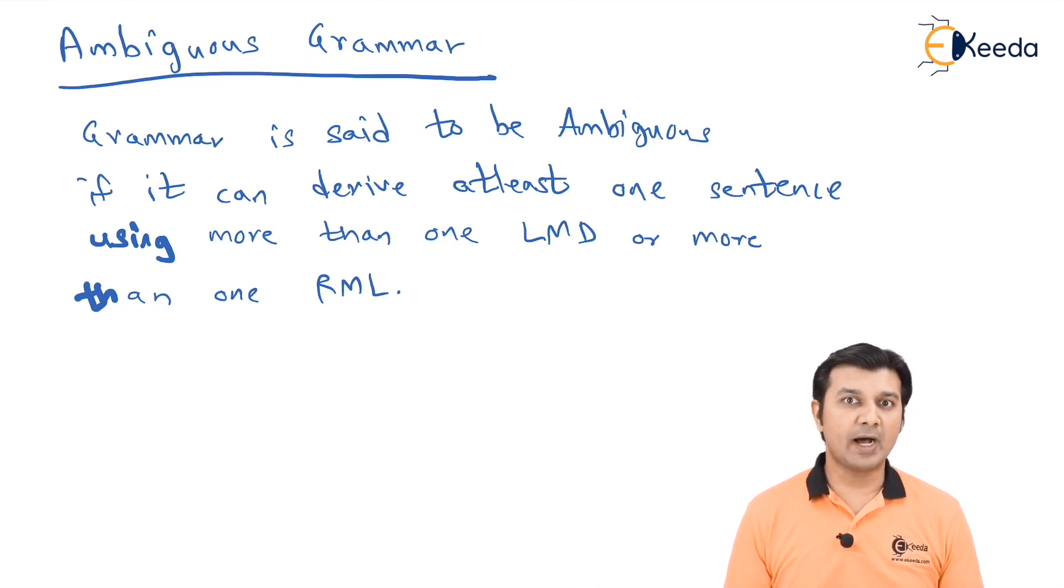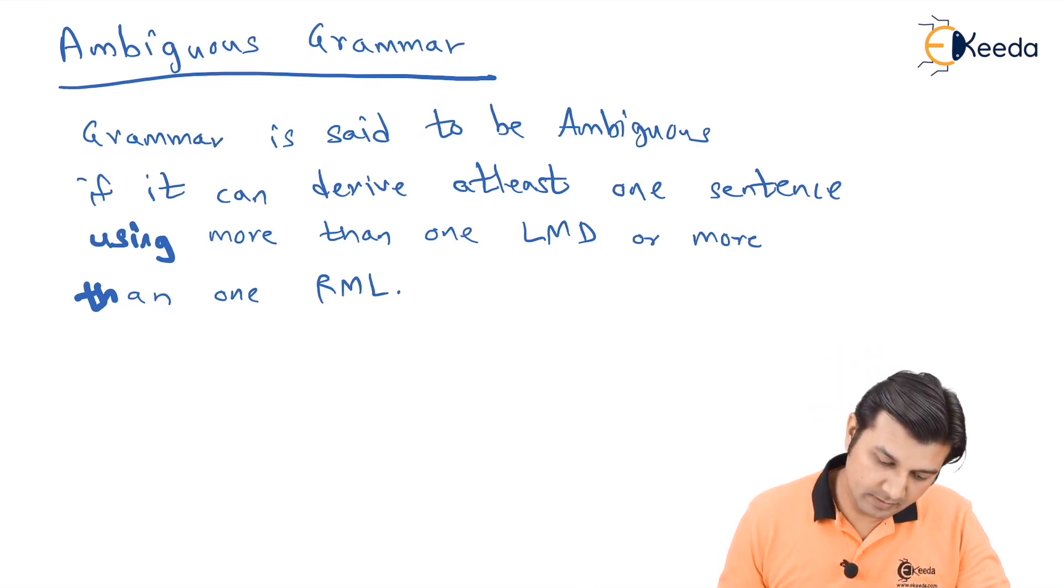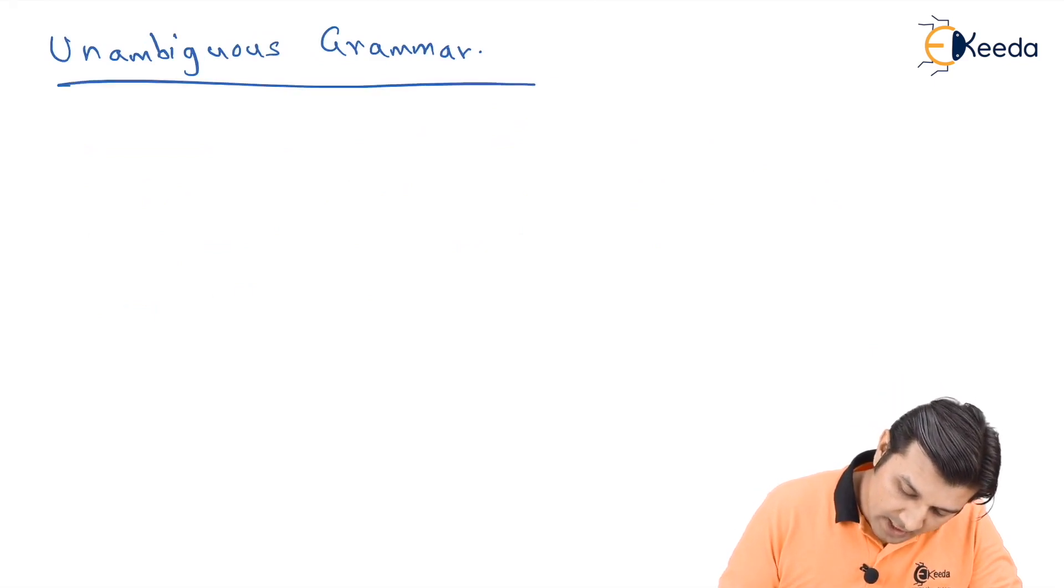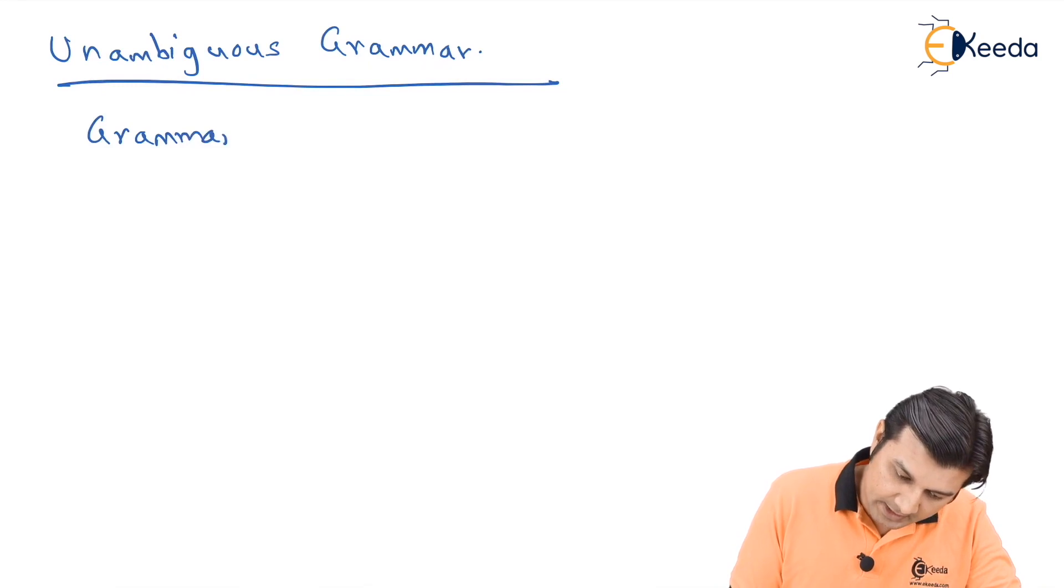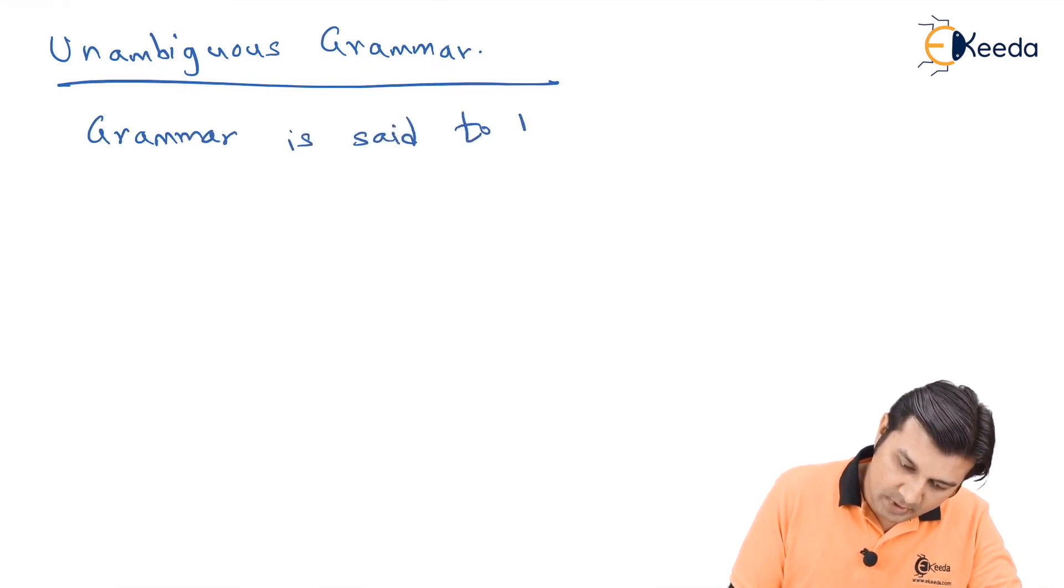Let's go on to the definition of unambiguous grammar. As far as unambiguous grammar is concerned, we say a grammar is said to be unambiguous